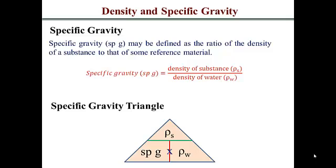Similar triangle here. If you needed the density of your substance, it will be the specific gravity at the bottom there, multiplied by the density of water. And if you needed the density of water, if you didn't know it, which by the way is one gram per ml, you could do density of substance divided by specific gravity.